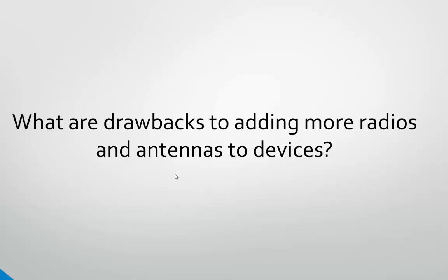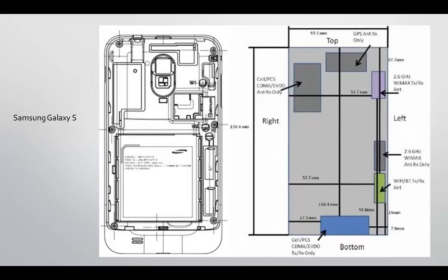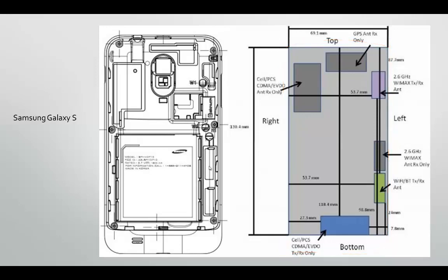The drawbacks to adding more radios and antennas to devices include battery drain, while the advantage is being able to use spatial streams which tremendously impacts data rate. Spatial streaming depends entirely on antenna design and power efficiency of RF radios. Here's a Samsung Galaxy S showing its different antennas — GPS antennas, WiMAX antennas at 2.6 GHz, Wi-Fi antennas, and cellular antennas. One of the frustrations with small mobile devices is fitting all these radios and antennas in while keeping the device slim and attractive — a real challenge for RF engineers.